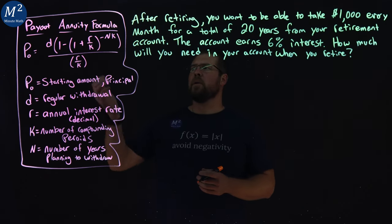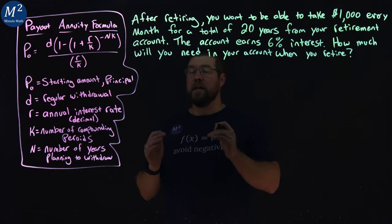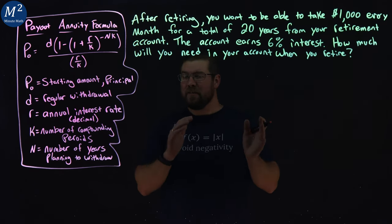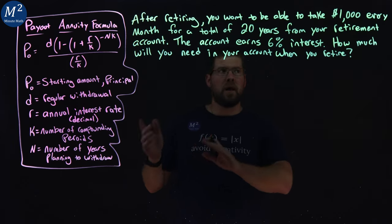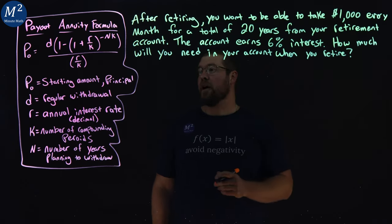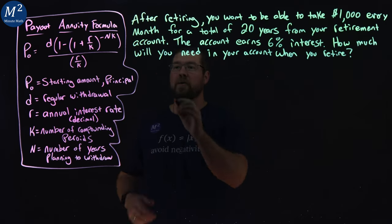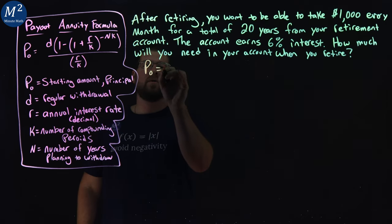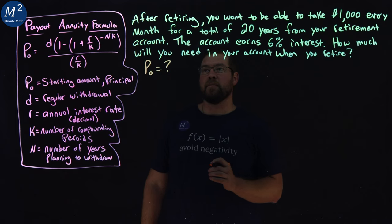This is the formula right here for that. Let's identify some key parts that we need to find and what we know. The question here is how much will you need in your account when you retire? That's going to be the initial amount, P sub 0, we do not know.